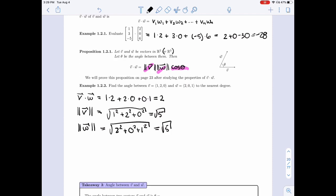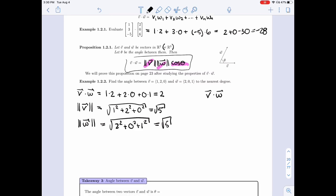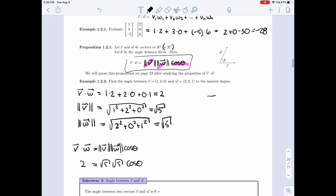All right, so we have all the algebra done, all those computations. Now, let me rewrite this identity with those numbers in mind. So v dot w is length of v, length of w, cosine theta. Let's put it here. And so what we have is that 2 is root of 5, root of 5, cosine theta. And so that means that cosine theta is 2 over 5.